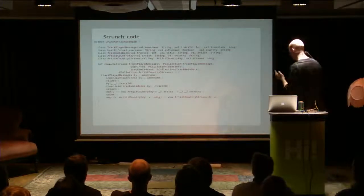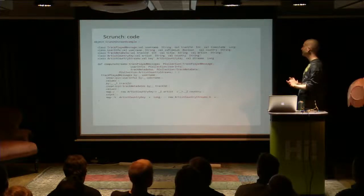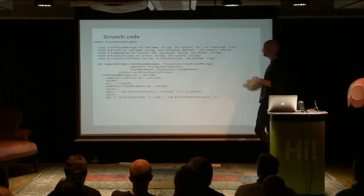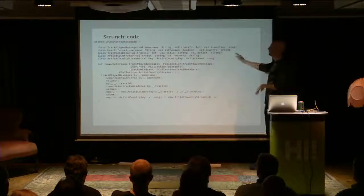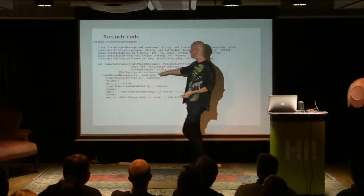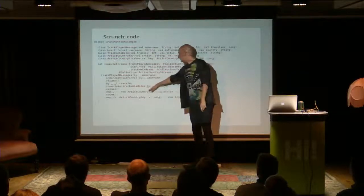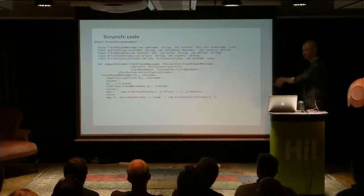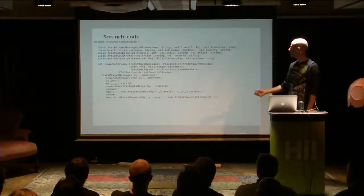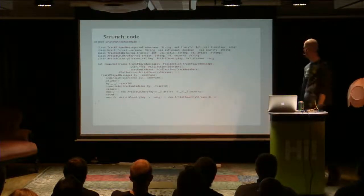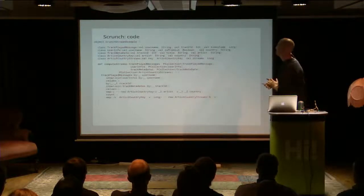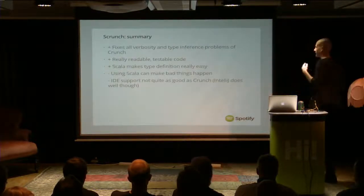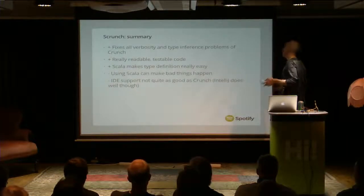In Scrunch, the whole code including all the type definitions is very concise. You have all these standard Scala type definitions for immutable value classes and then all these PCollections, and all your key functions just become lambdas using the underscore notation or the arrow notation. You save so many characters and your intent becomes completely obvious. It fixes all the verbosity and type inference problems of Crunch — readable, testable code with Scala type definitions.